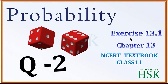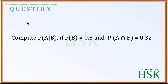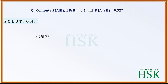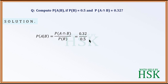Taking question number 2 of exercise 13.1. The question is: compute probability of A given B, if probability of B is equal to 0.5 and probability of A intersection B is equal to 0.32. The probability of A given B is equal to probability of A intersection B upon probability of B. Substituting 0.32 upon 0.5, this simplifies to 32 upon 50, which equals 16 upon 25 or 0.64, which is the required answer.